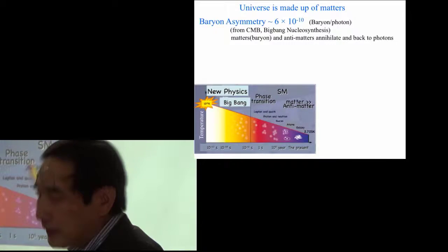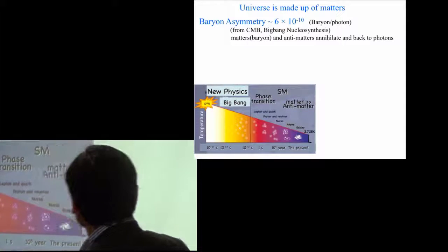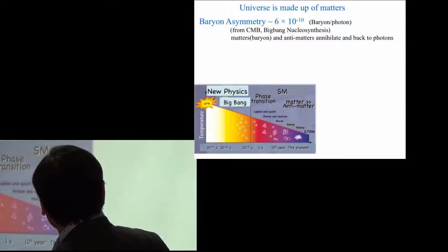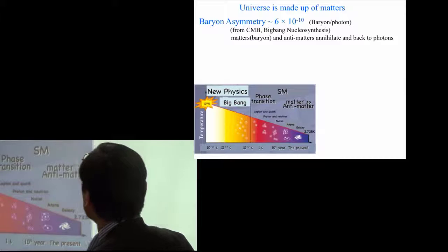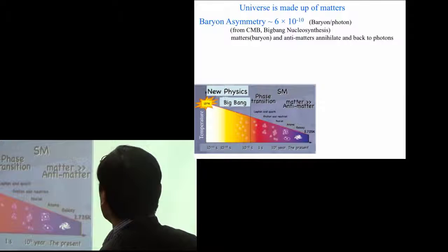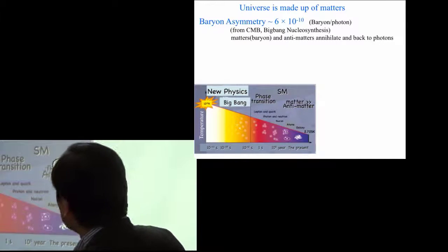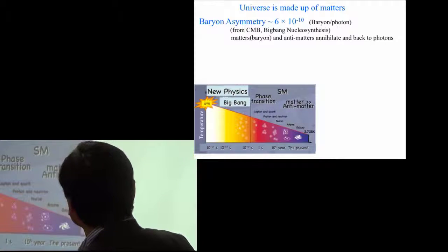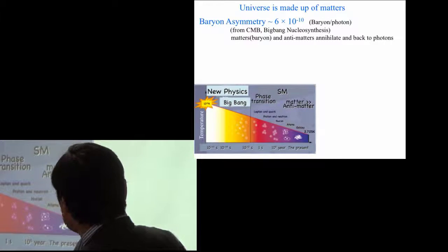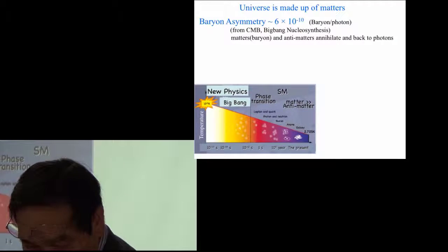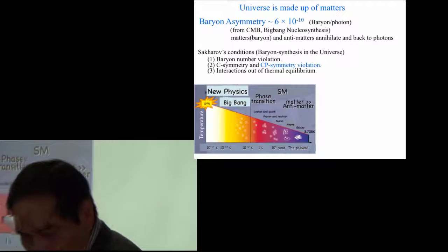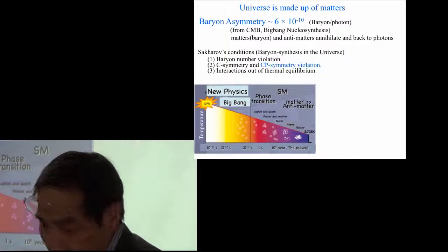And the baryon asymmetry, which is the ratio between baryon density and photon density, determined by depending from the cosmic microwave background, and it is 6 times 10 to the minus 10.